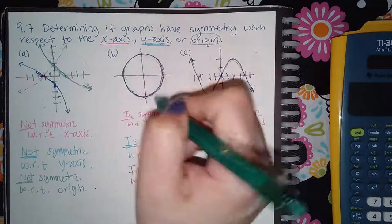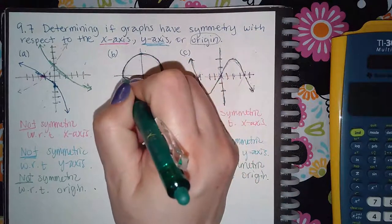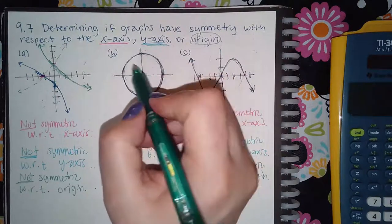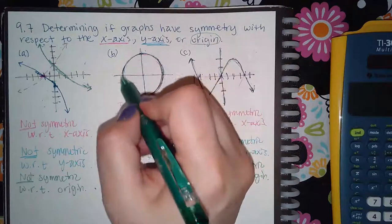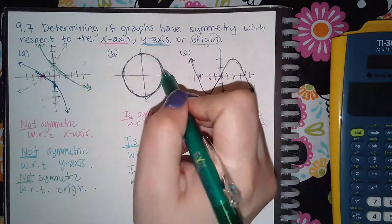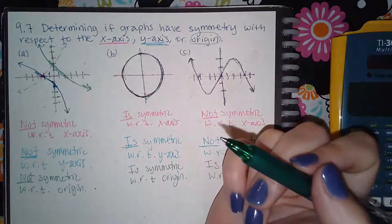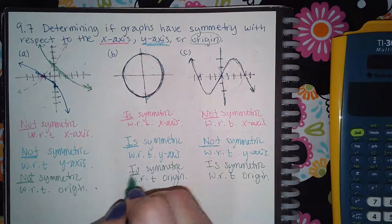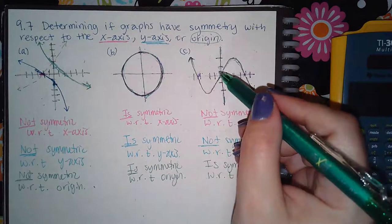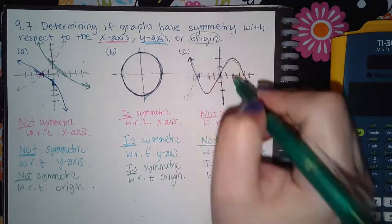Now let's look at the circle. If I flip it over the x-axis, the top part becomes the bottom and the bottom becomes the top, making the whole complete circle — it should be dotted. Then if I flip it over the y-axis, the left dotted green line turns over solid and the right dotted green line turns over solid. It still lands on itself, so it is symmetric with respect to the origin.